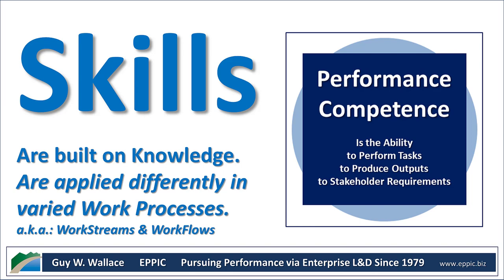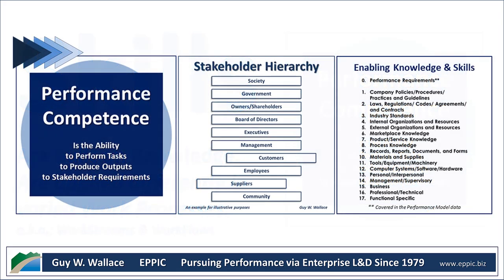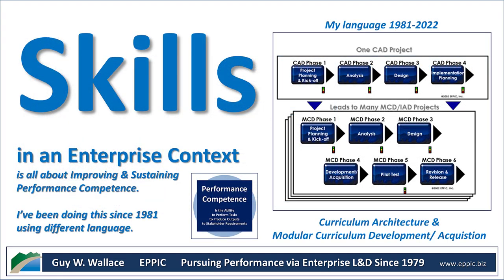Skills themselves are built on knowledge and are applied differently in varied work processes, also known as work streams and workflows. What's important about performance competence and the skills that enable it are the stakeholder requirements, and that allows you — once you understand the outputs to be produced and the tasks to be performed — to identify what enabling knowledge and skills are required.